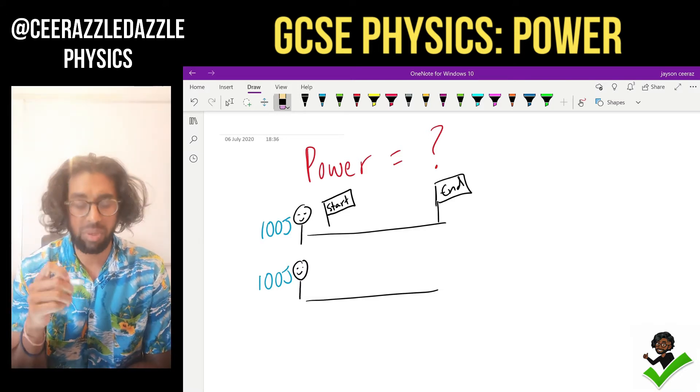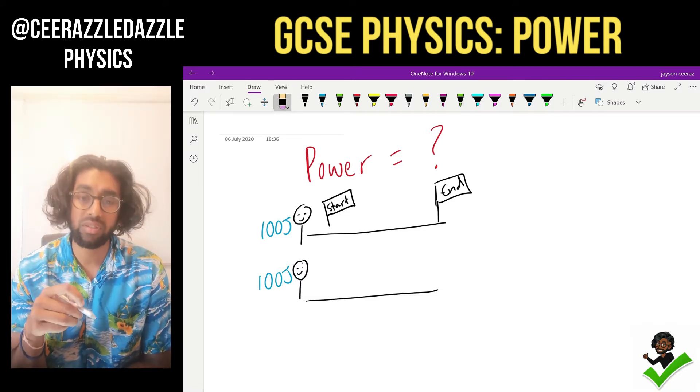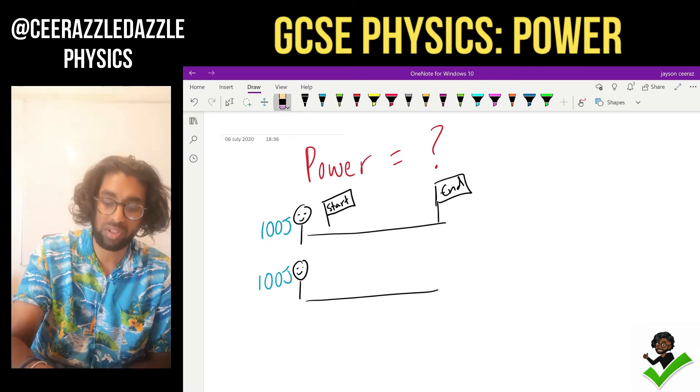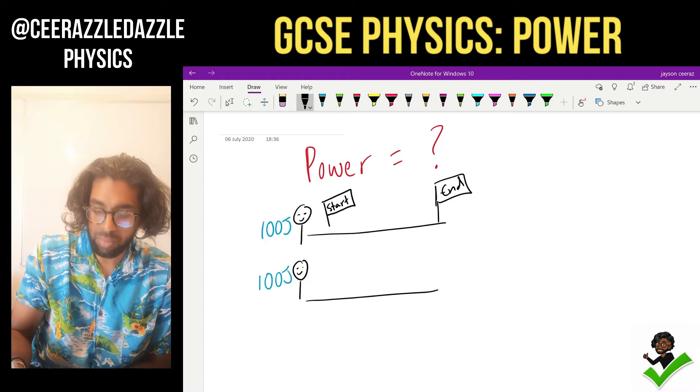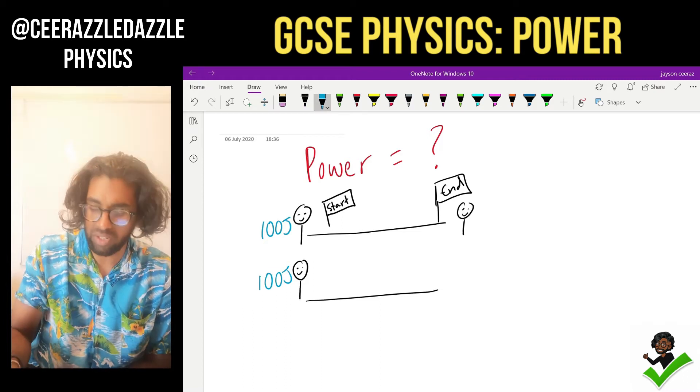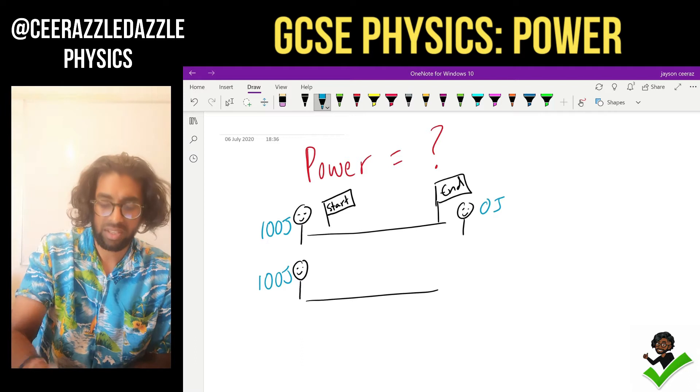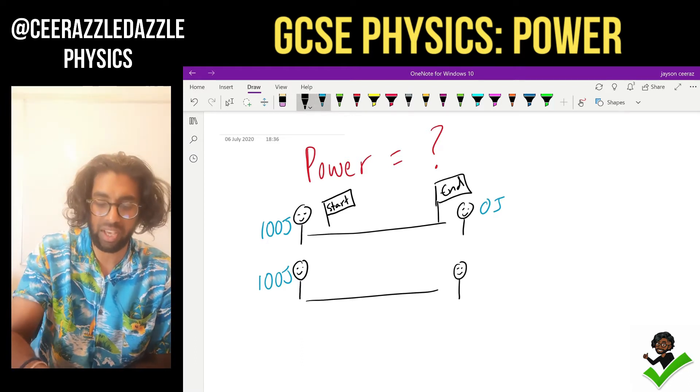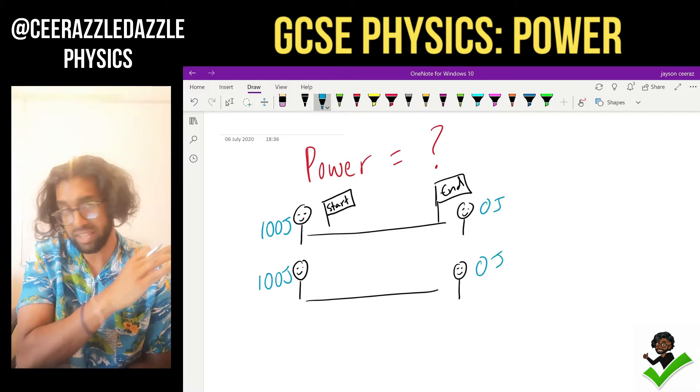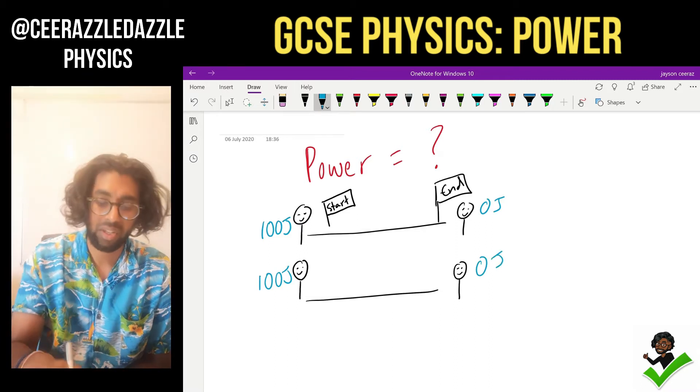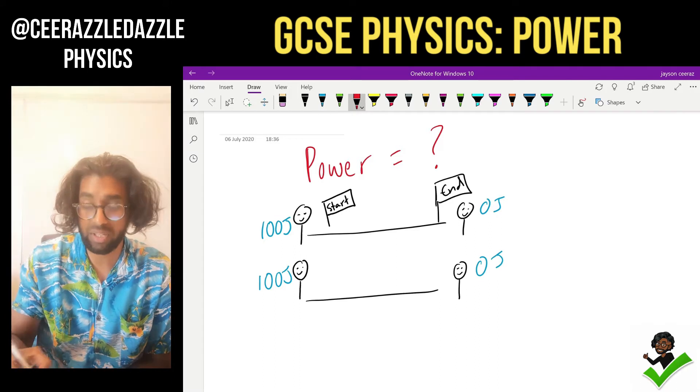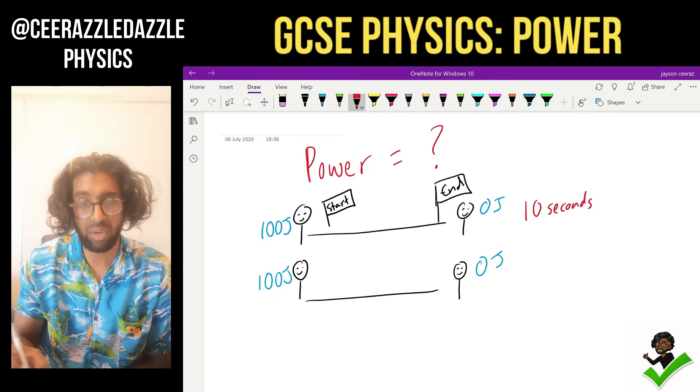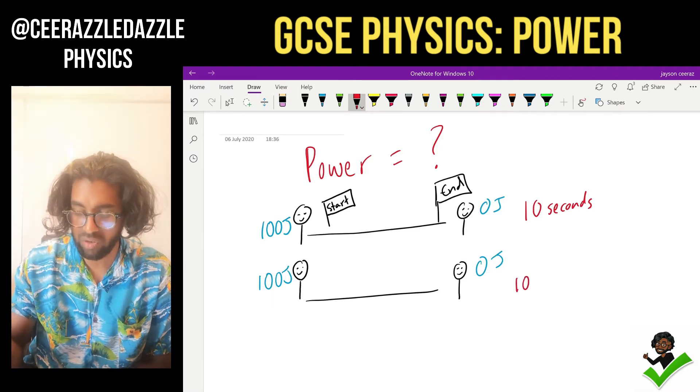Let's say we have two people running a race. They both start the race with a hundred joules inside them. The first one completes the race and loses all the energy. The second one also completes the race and they also lose all their energy. So they start off with a hundred each and then at the end of the race they've lost all the energy. But the first one completes the race in ten seconds. The second one completes the race in a hundred seconds.